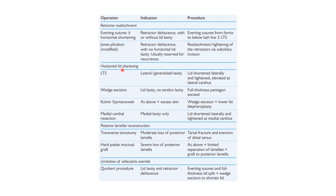The next type of procedures is horizontal lid shortening procedures. Lateral tarsal strip is indicated for lateral or generalized laxity — the lid is shortened laterally and tightened and elevated at lateral canthus. Next is wedge excision, indicated in lid laxity with no tendon laxity, involving full thickness pentagon excision. Next is Kuhnt-Szymanowski's procedure, indicated in lid laxity, no tendon laxity, and when there is excess skin — wedge excision along with lower lid blepharoplasty. Next is medial canthal resection, indicated when there is medial laxity only — the lid is shortened and tightened at the medial canthus.